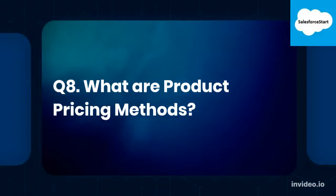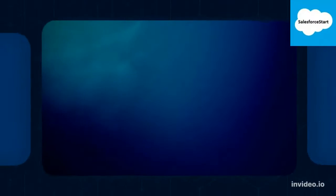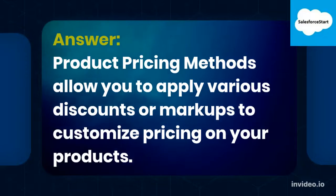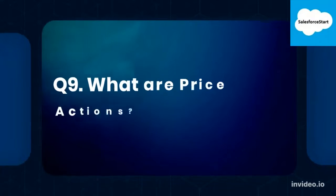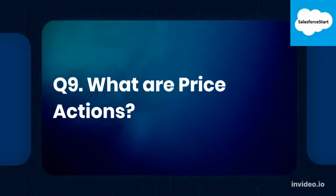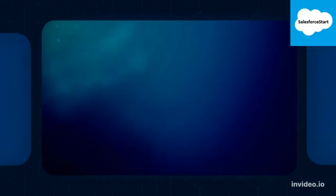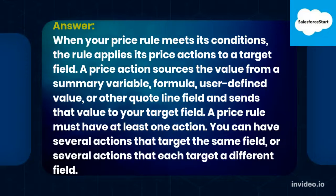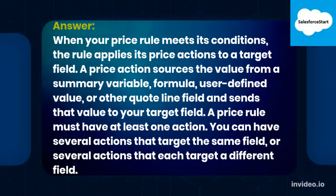Q8. What are product pricing methods? Product pricing methods allow you to apply various discounts or markups to customize pricing on your products. Q9. What are price actions? When your price rule meets its conditions, the rule applies its price actions to a target field. A price action sources the value from a summary variable, formula, user-defined value, or other quote line field, and sends that value to your target field. A price rule must have at least one action. You can have several actions that target the same field, or several actions that each target a different field.